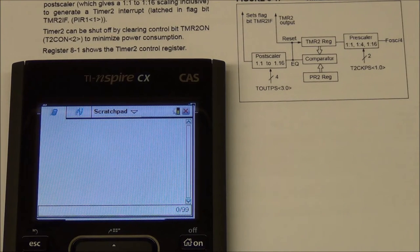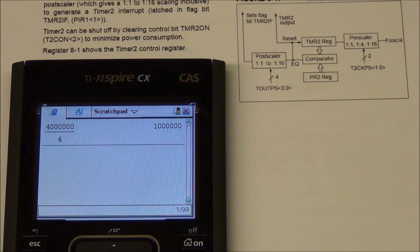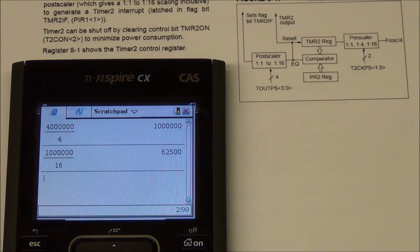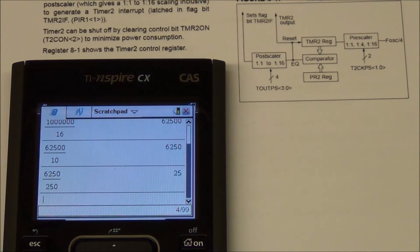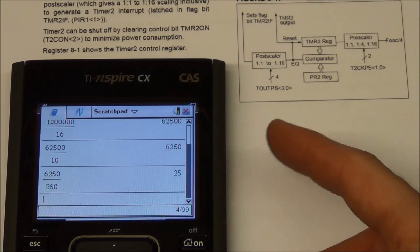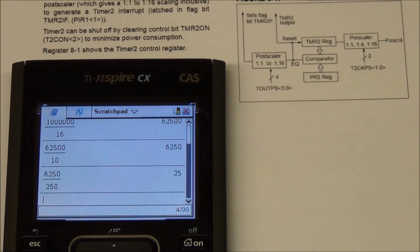So if we take our main frequency of 4 MHz and we divide that by 4, the timer 2 frequency is always divided by 4, and the main frequency we'll get 1 million. And we divide it by the pre-scaler, we will set this to 16, and we divide it by the post-scaler, we'll set this to 10, and we'll then set the PR2 register to 250, and we'll get 25. So that means every time the timer has run out 25 times, one second has passed, and that should be very easy to turn into a clock.